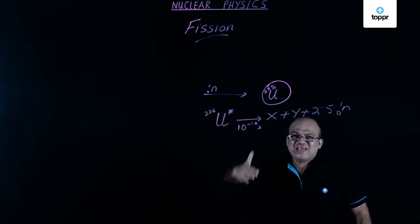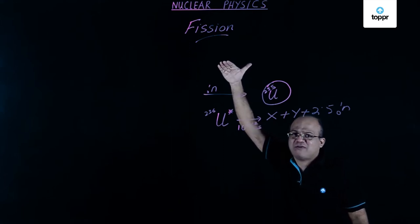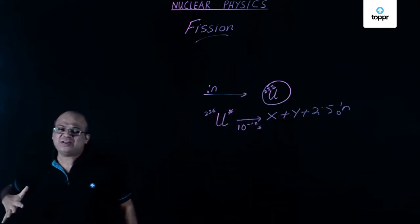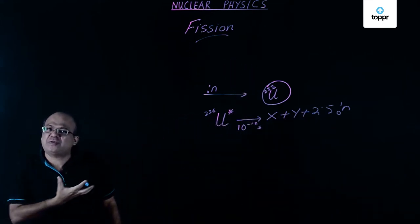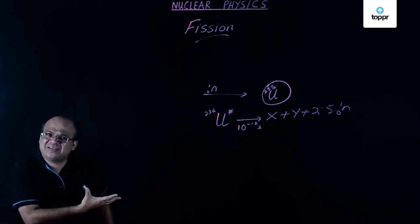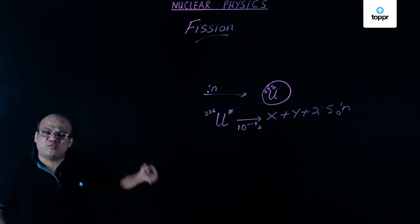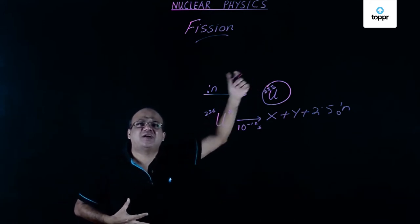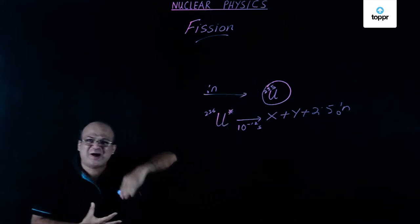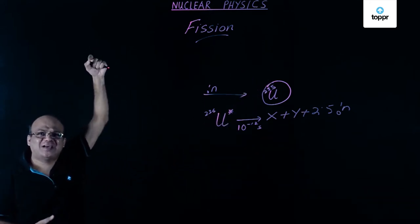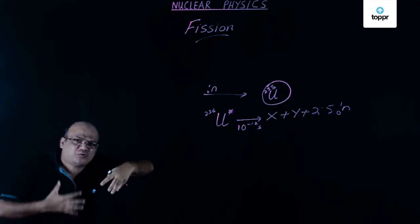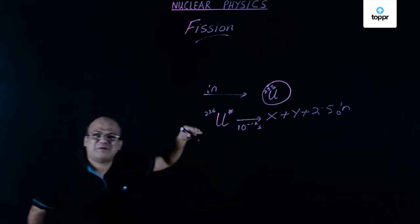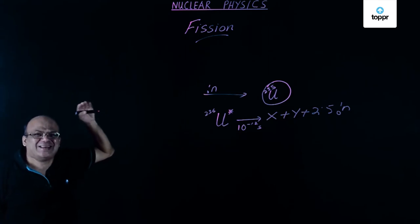If you remember, an electron jumps from a higher energy level to a lower energy level in 10 to the power minus 8 seconds. When a nucleus emits an alpha particle or a beta particle, it goes to an excited state and jumps back in 10 to the power minus 10 seconds.